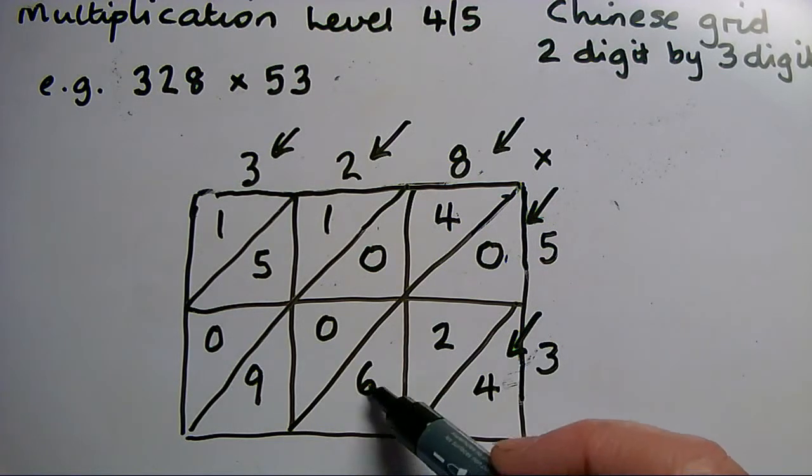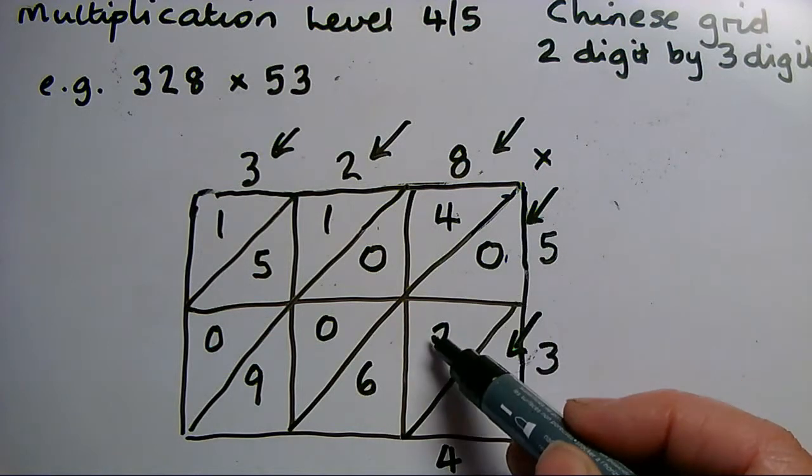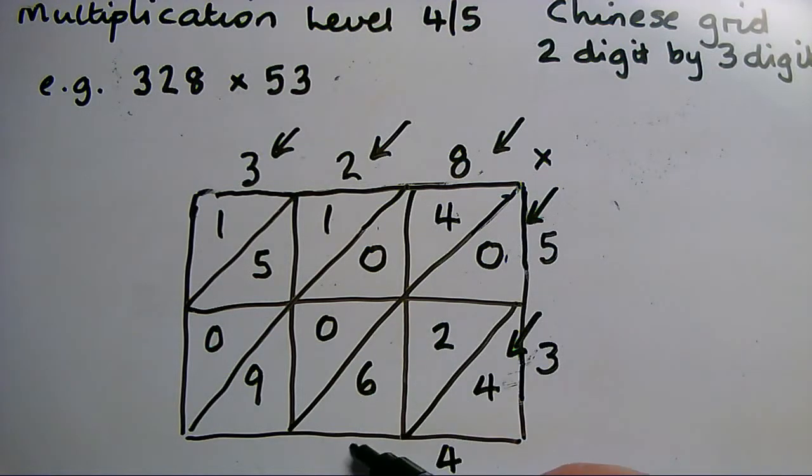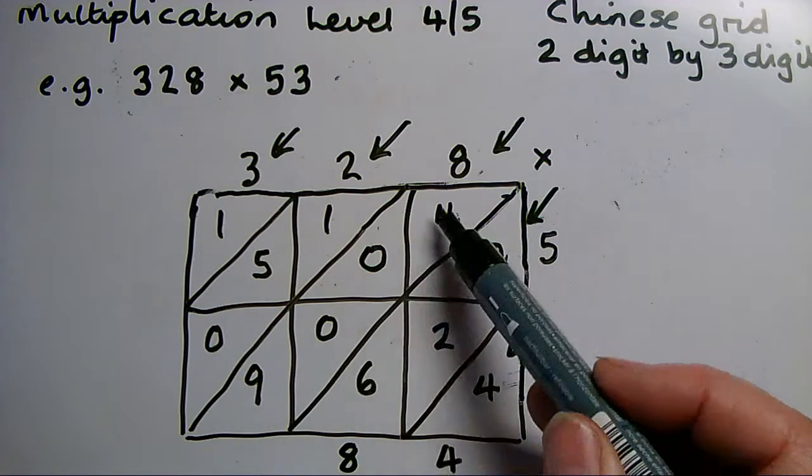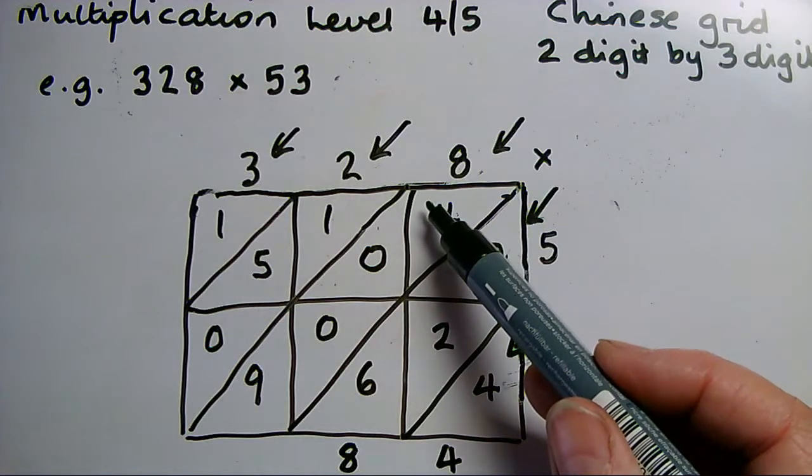I'm going to add down here. There's just a 4 in that triangle there, so the 4 is part of my answer. In this diagonal here I've got a 0, a 2, and a 6. I add those together, I get 8. I'm going down this diagonal here and I've got 13, 9, and 4, so that's 13. I put 3 at the bottom of there and get 1 over into the next diagonal.